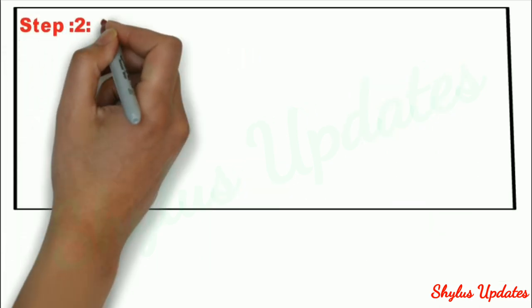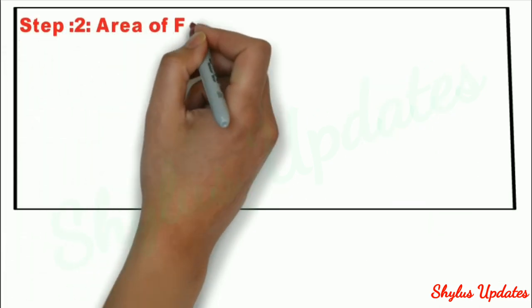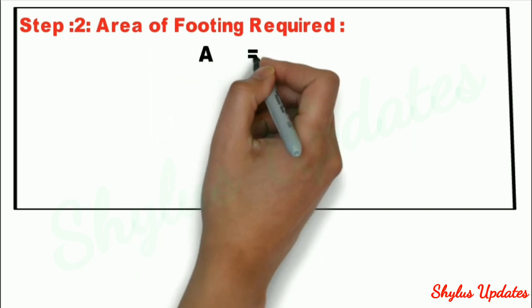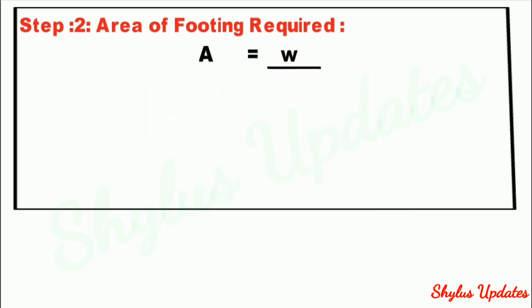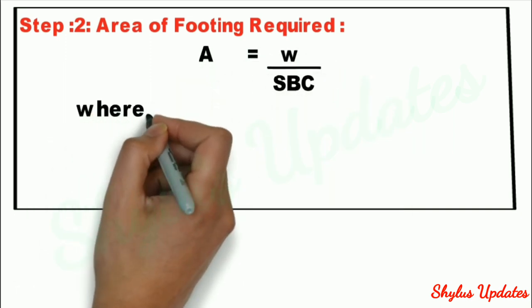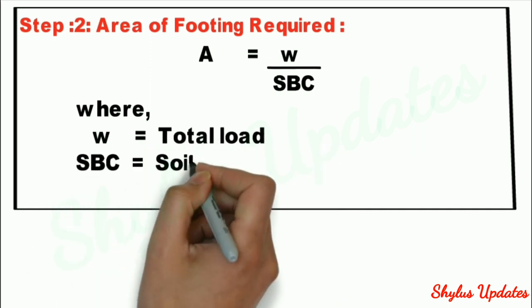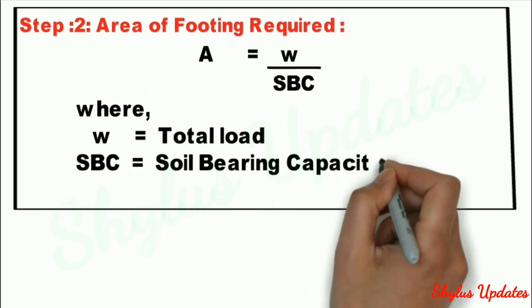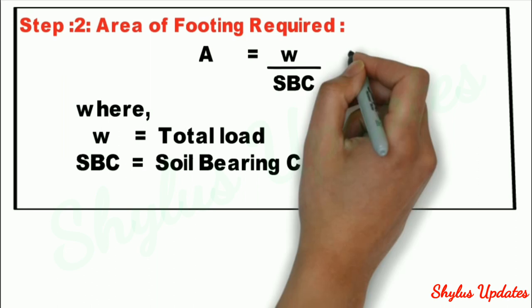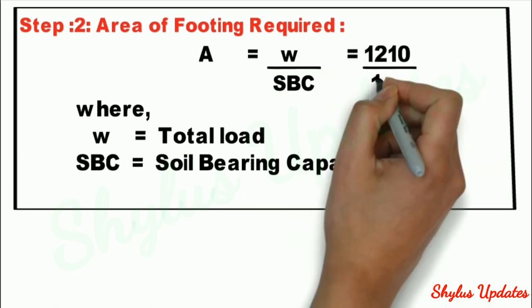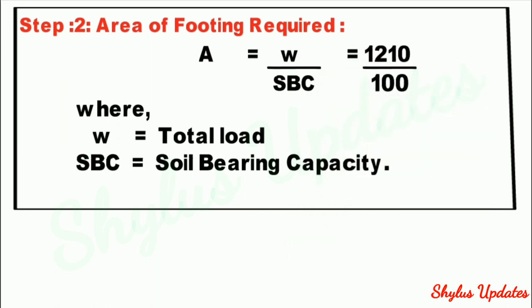Step 2: Area of footing required. The formula is A equals W divided by SBC, where W is the total load and SBC means soil bearing capacity. When we substitute the values, we get the area of footing required as 12.1 m².